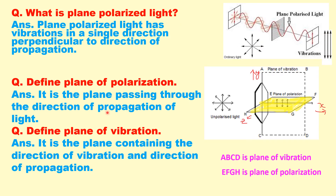What is the plane of polarization? The plane of polarization contains the direction of propagation of light. The plane EFG shown in the yellow shaded region is known as the plane of polarization, and it lies in the XZ plane. What is the plane of vibration? The plane of vibration contains both the direction of vibration and the direction of propagation — it is the ABCD plane, lying in the XY plane.